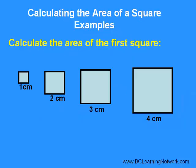Now, let's do some examples. Let's calculate the area of this first square together. We'll use our area formula: A equals W squared. We know the width is 1, so A equals 1 squared. 1 squared means 1 times 1, which of course equals 1. So the area of this first square is 1 centimeter squared.